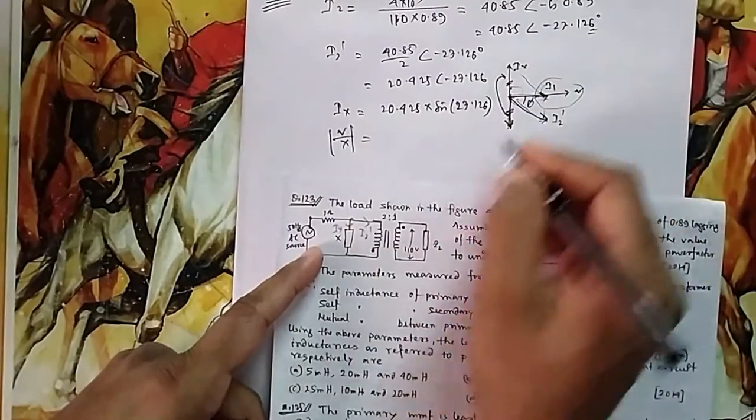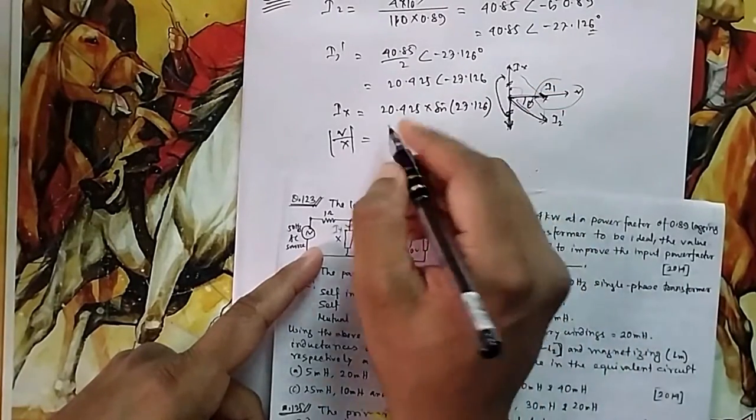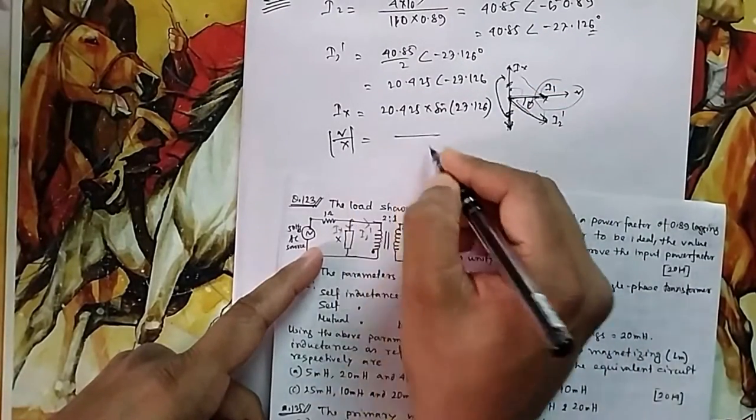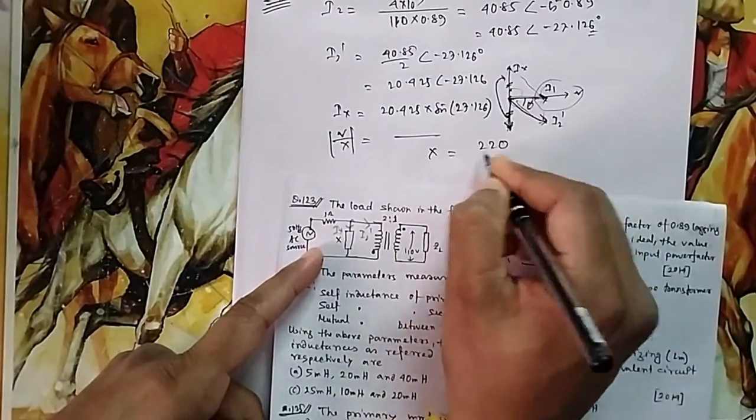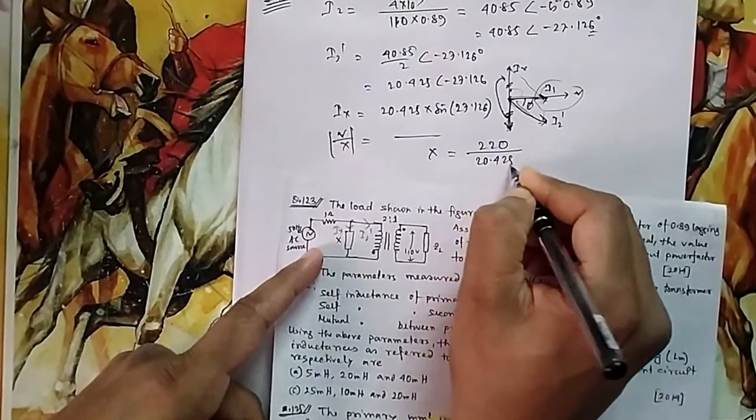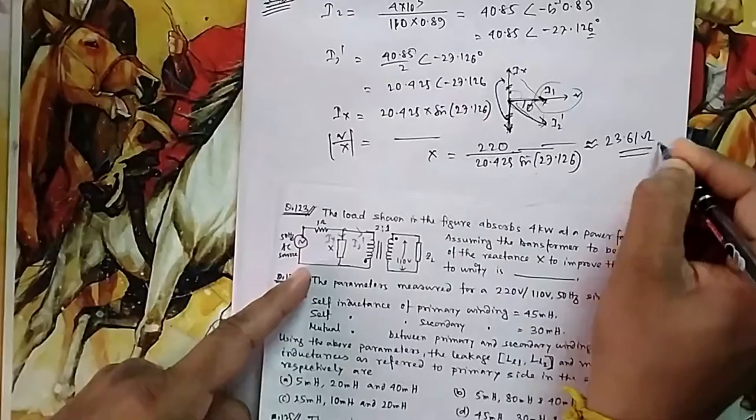So it is V by X that should be equal to this magnitude. I am talking about angle - I know because it should be 90 degree leading. So obviously it should be a capacitor. So whatever it is there, you can calculate your X will be equal to 220 divided by 20.425. It will come 23.610. So that is your answer.